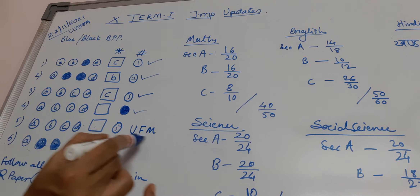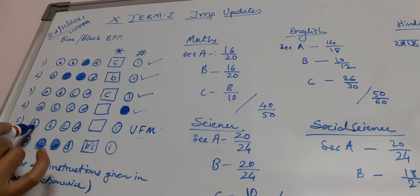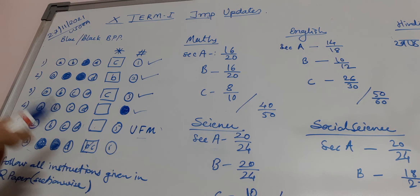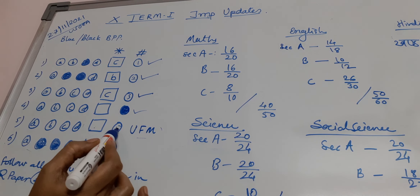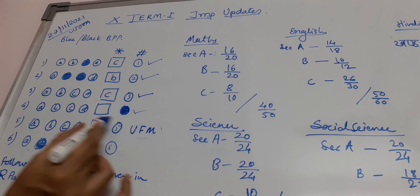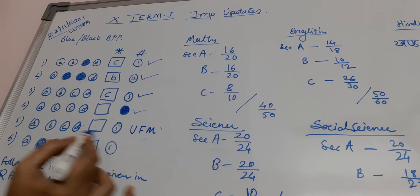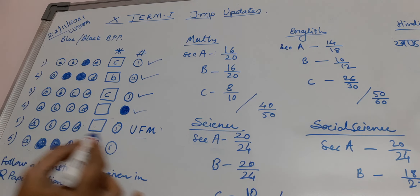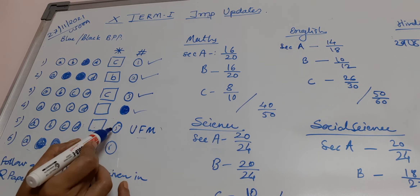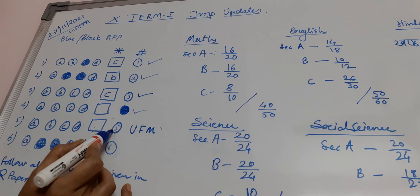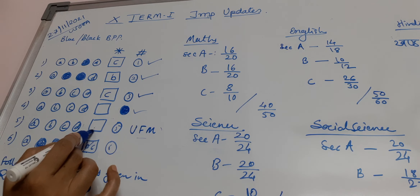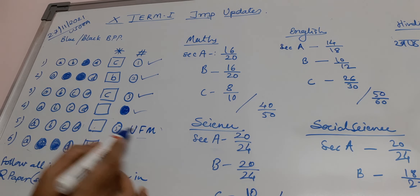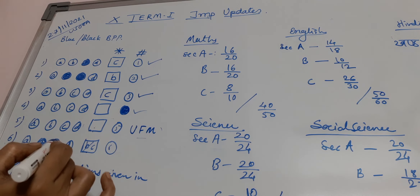If you don't want to attempt the question and you have left all four circles blank, as well as the hash box — this will be considered as unfair means. Either you mark the answer or mark it as unattempted in the hash column — you must fill one of these. You need not leave this empty; it will be taken as unfair means.